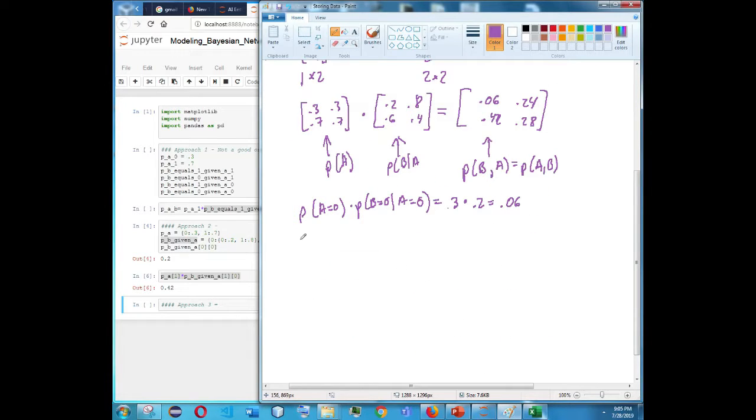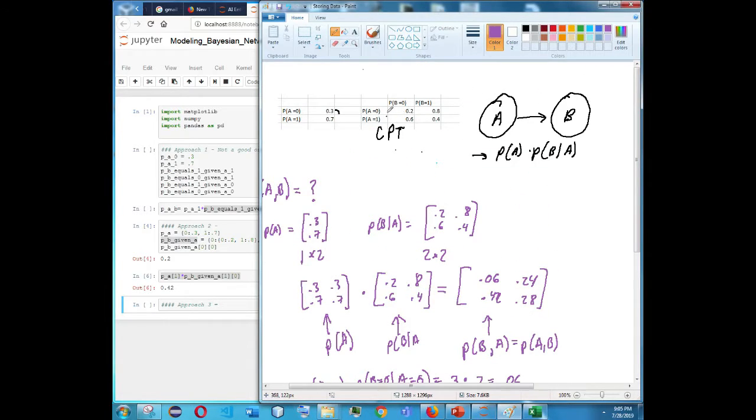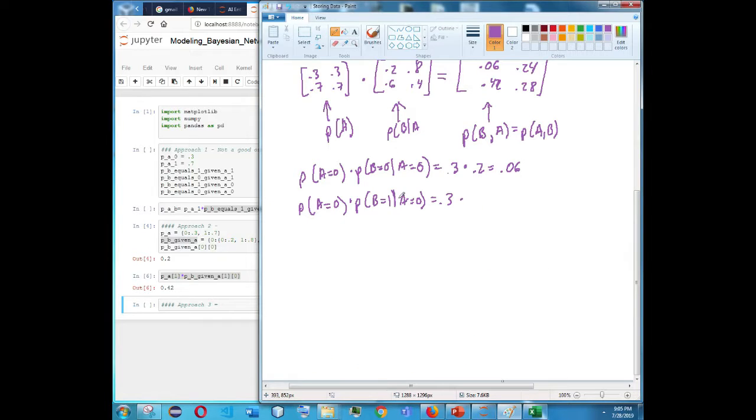And let's just go over one more example. We'll do P of A equals 0 again, but we'll do P of B equals 1 given A equals 0. So we get the same value, 0.3, but that is then, so A equals 0, and then B equals 1 given A equals 0 is 0.8. So if we wrote that out, you will get 0.24.